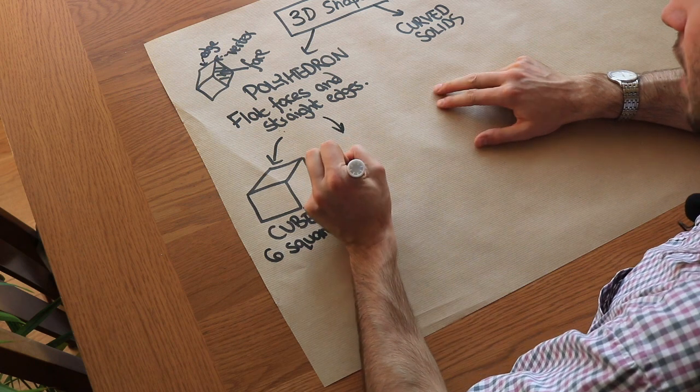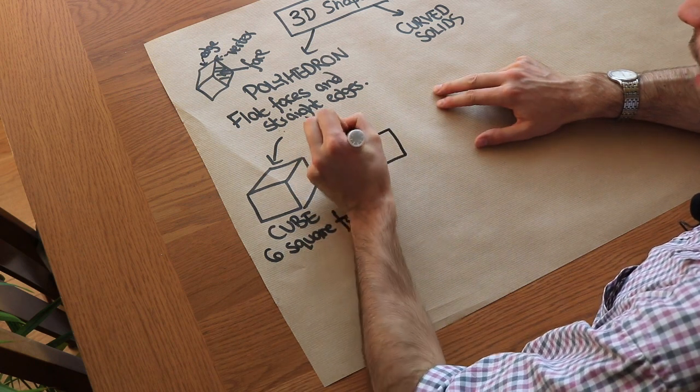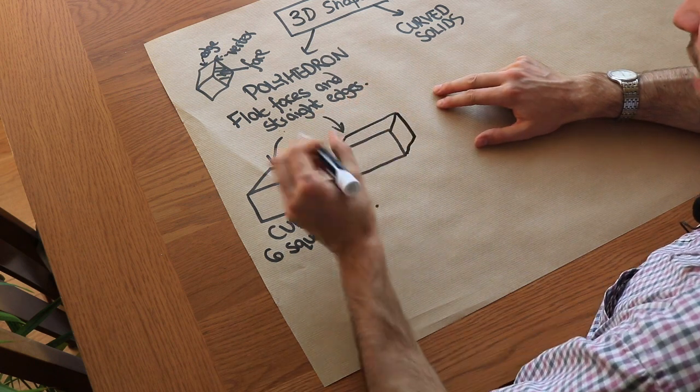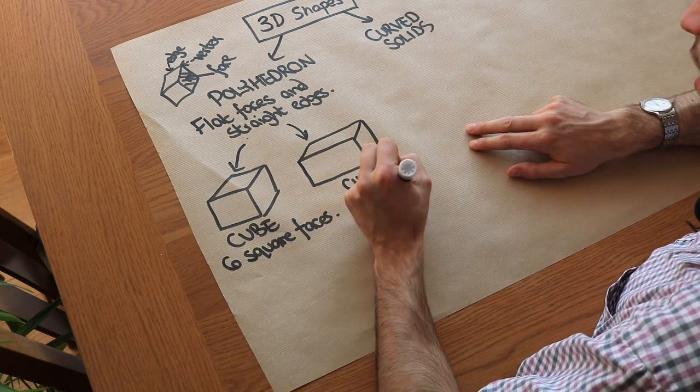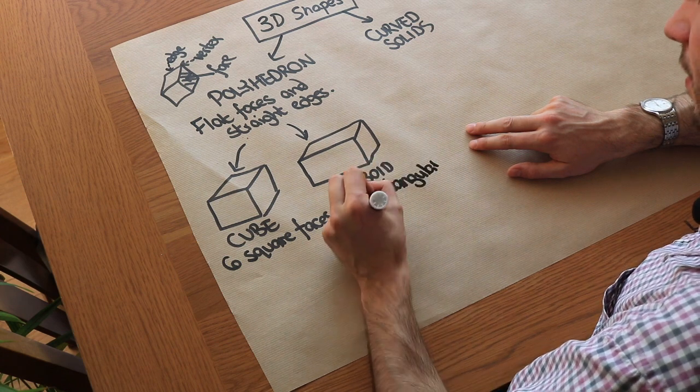The 3D version of a rectangle is a cuboid. And the definition of a cuboid is it has six rectangular faces.